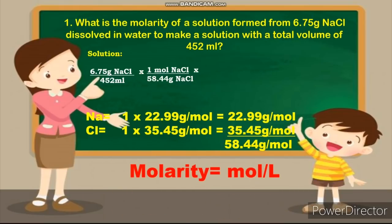Using the periodic table, the molar mass of sodium is 22.99 g per mole, while chlorine has 35.45 g per mole. We multiply each by 1, since sodium and chlorine each have only one atom in NaCl. After multiplying, we add these to get 58.44 g of NaCl per mole.